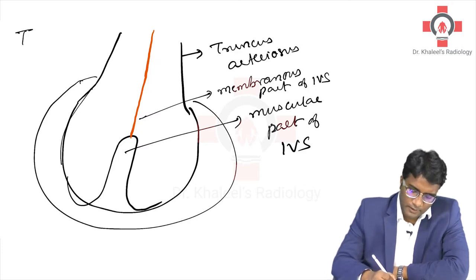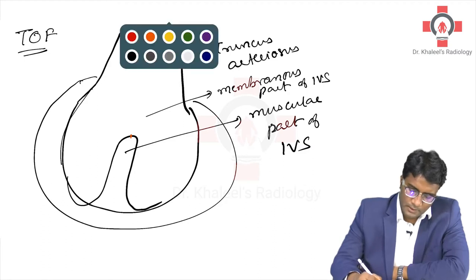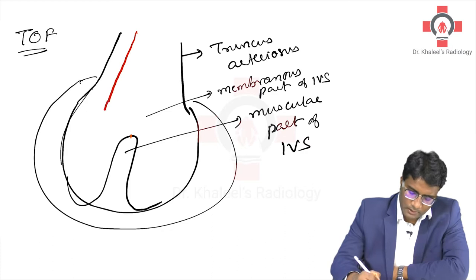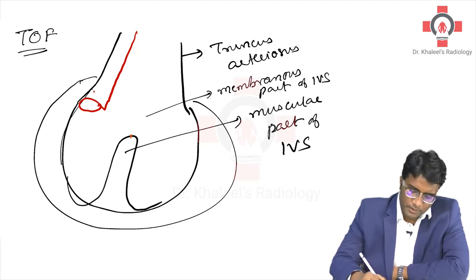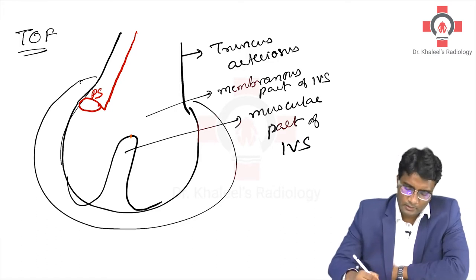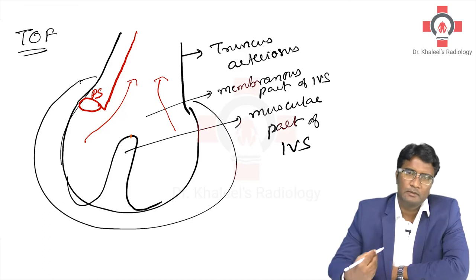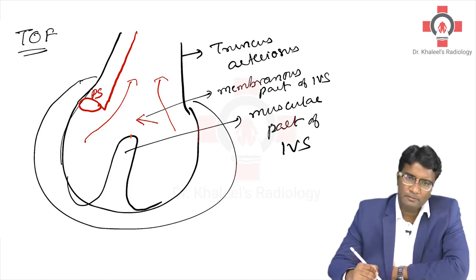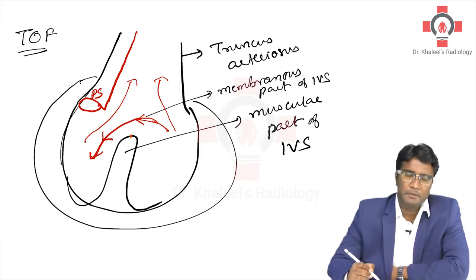In Tetralogy of Fallot, what happens is there is malalignment of the aorticopulmonary septum. This aorticopulmonary septum gets malaligned very close towards the right side. So there will be pulmonary stenosis because it is aligned on one side, and the blood from both ventricles can enter into the aorta — leading to overriding aorta. And what type of VSD will develop? It is a membranous VSD.